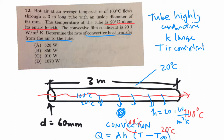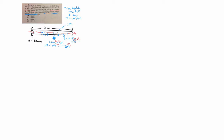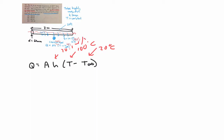So let's go ahead and solve this. Our equation is Q equals A times H times (T minus T infinity). In this case we have 20 degrees C for the tube and 100 degrees C for the air, and H is 20.1 watts per meter squared kelvin.